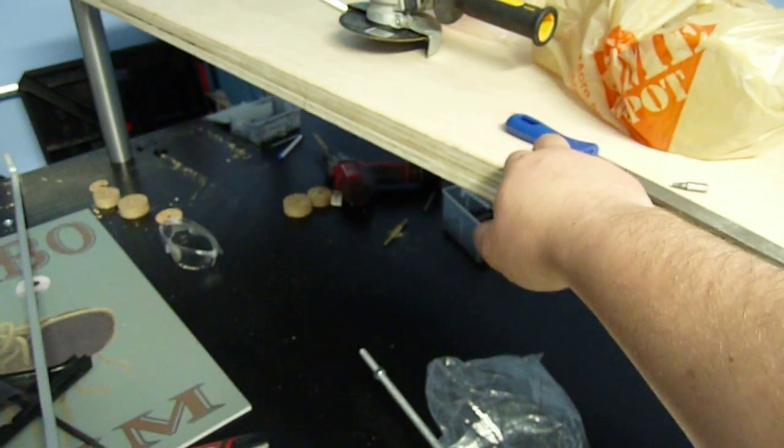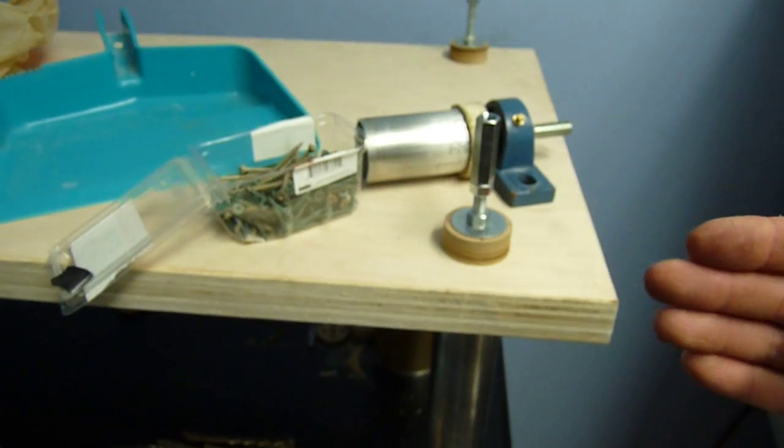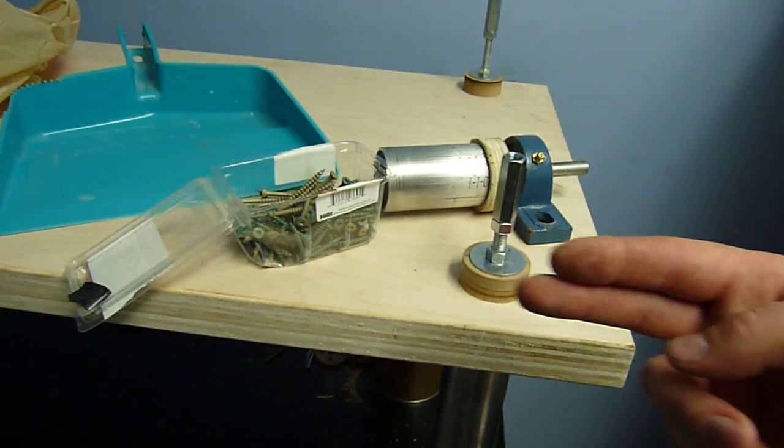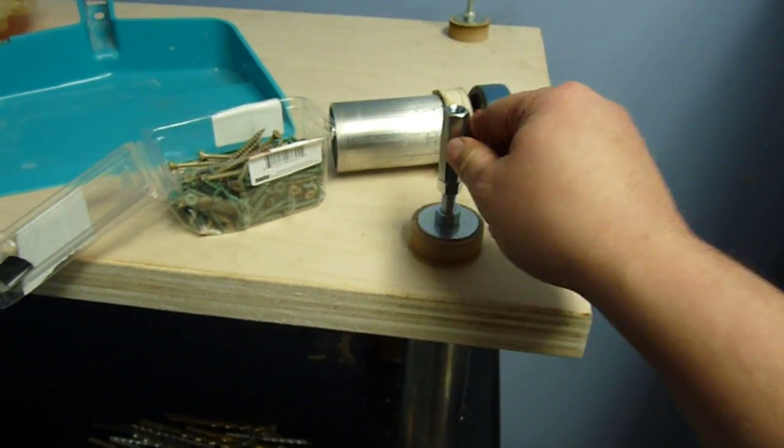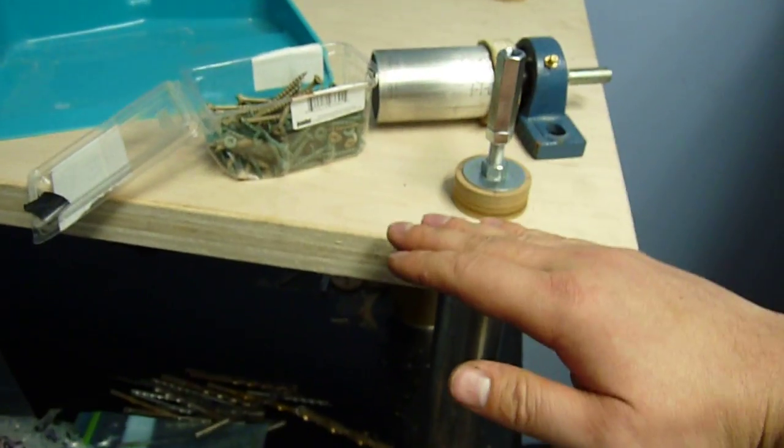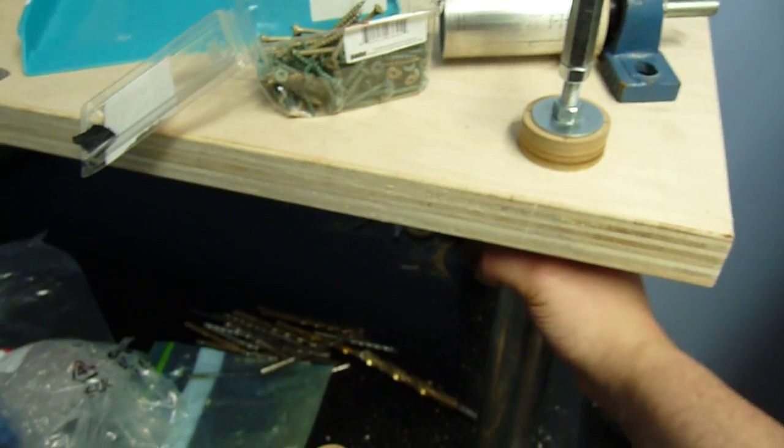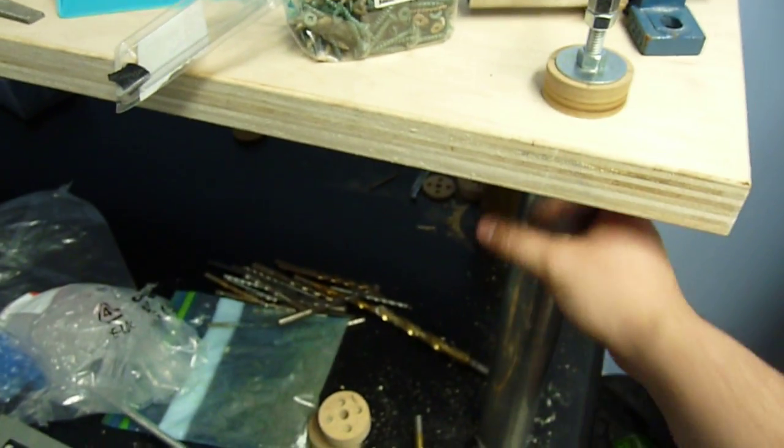And if the pipe, if the shelf flexes there might be some sideways inwards tension on the pipe and on the threaded rod. But it's going to be minimal. Most of the pressure is going to be downward pressure. So the pipe can handle easily probably maybe 3-4 thousand pounds, which I'm not going to have.